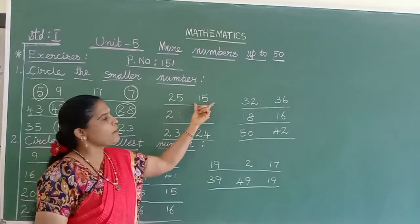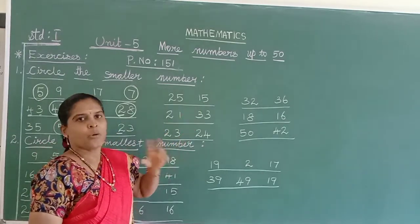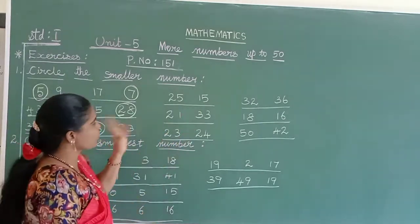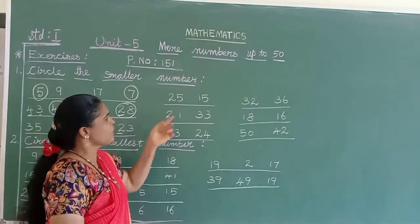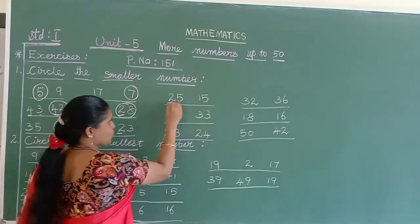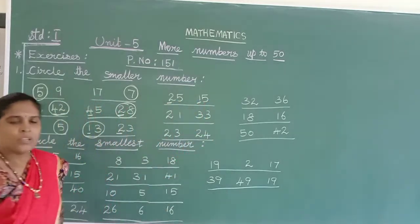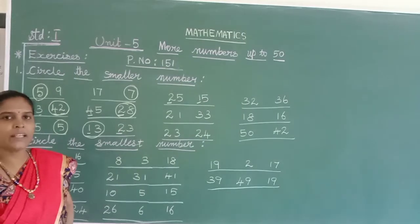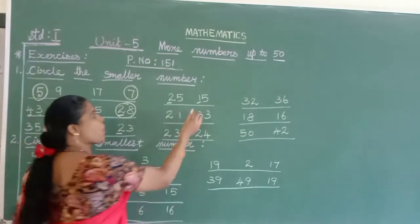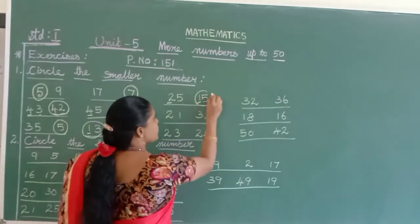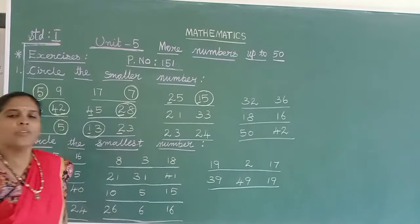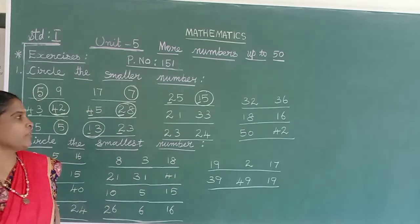25 and 15 — both are 2-digit numbers. Come to the tens column: 2 and 1. Which is smaller? 1 is smaller than 2. So you should circle 15.